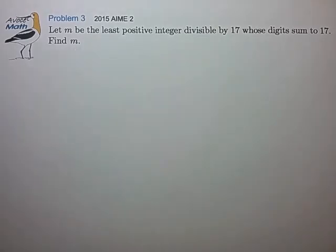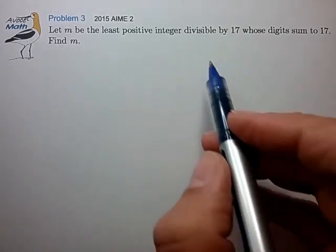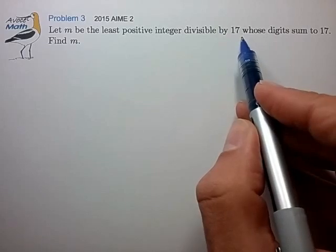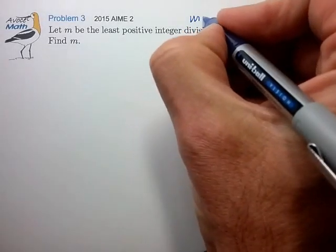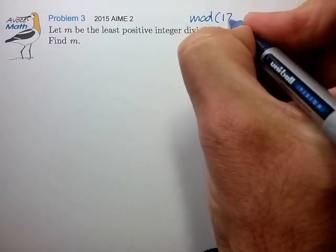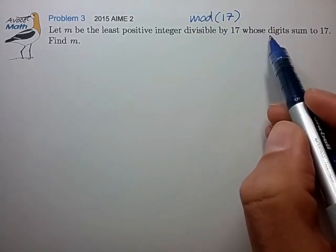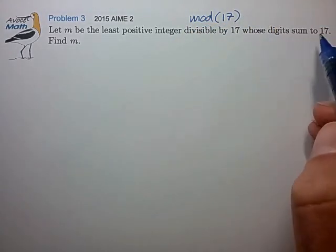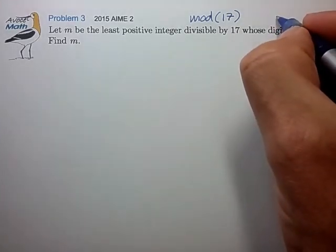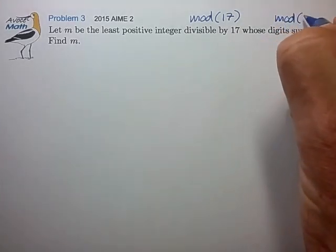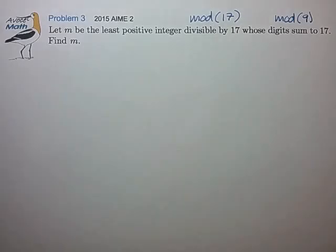Okay, this certainly smells like a modular arithmetic problem. We have divisible by 17, so we should probably analyze this problem in mod 17. We also have a condition on the sum of the digits, so we should also probably analyze this problem in mod 9. We'll see why that is in a minute.